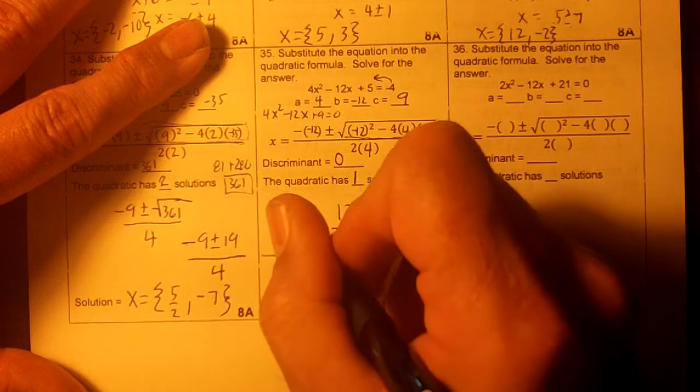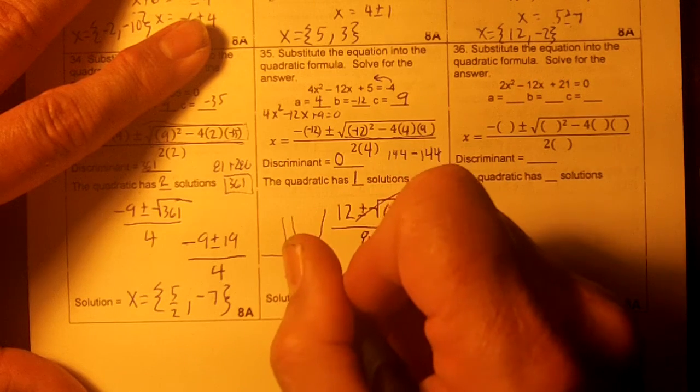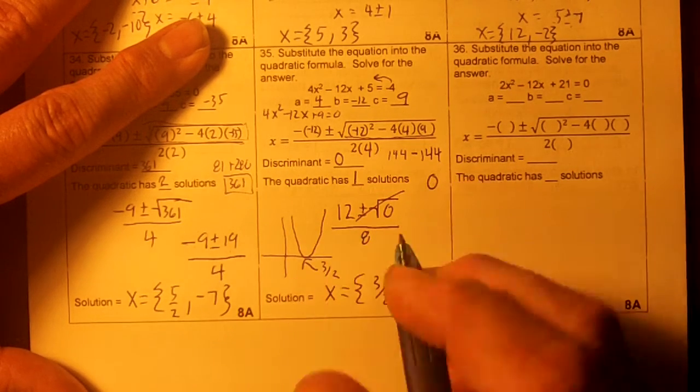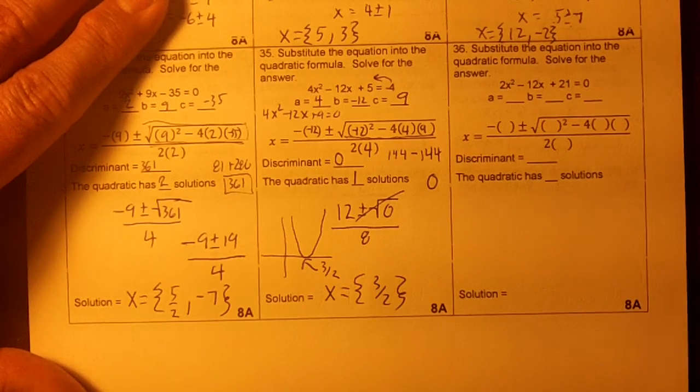So x equals 3 over 2. Basically, this parabola would look like this. And this point right here would be 3 over 2, or 1.5. It would only have 1 zero.